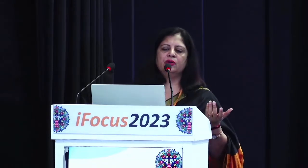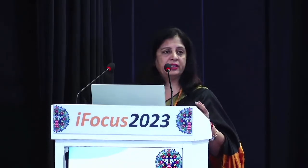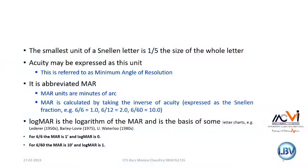In Snellen notation, the first number is the test distance and the second is the size of the alphabet the patient could read. We also add plus and minus for partial lines read. The smallest unit of a Snellen letter is one-fifth the size of the whole letter — because it has five components — and acuity can be expressed as the minimum angle of resolution (MAR), which can also be converted to LogMAR.